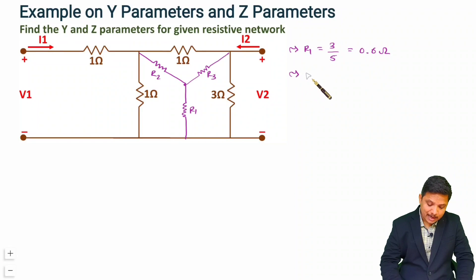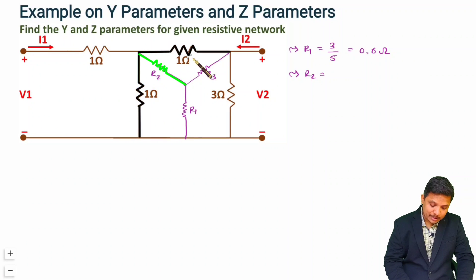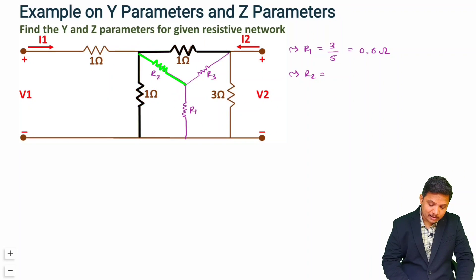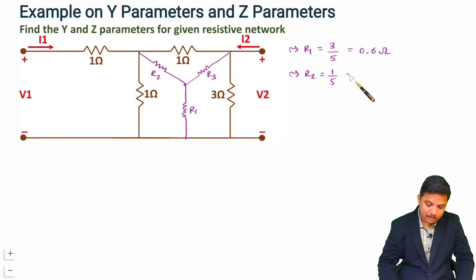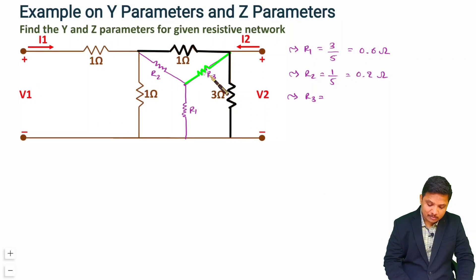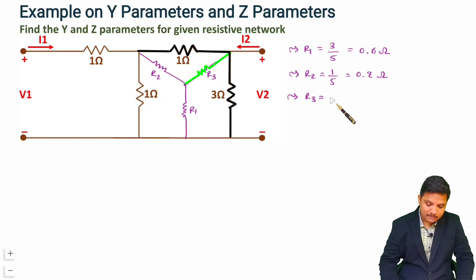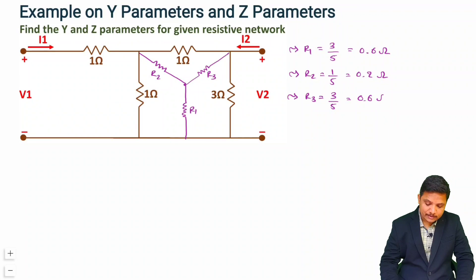Now, R2 is the product of its two adjacent delta resistors divided by the sum of all three: 1 × 1 = 1, divided by 5, so R2 = 0.2 ohm. R3 is 1 × 3 = 3, divided by 5, so R3 = 0.6 ohm.